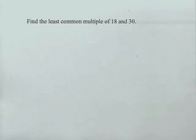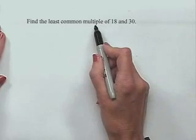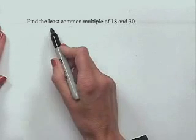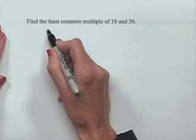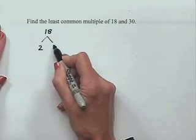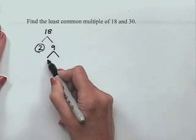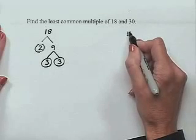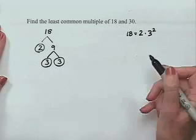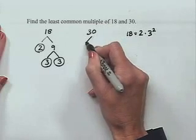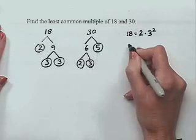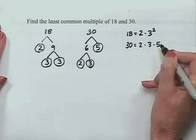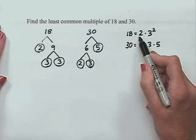Now we're going to look at a problem dealing with least common multiple. Find the least common multiple of 18 and 30. The LCM means we look at multiples of each number, find one common to both, and want the smallest such number. We'll use prime factorization. For 18: 18 is 2 times 9; 9 is 3 times 3. So 18 equals 2 times 3 squared. For 30: 30 is 6 times 5; 6 is 2 times 3. So 30 equals 2 times 3 times 5.